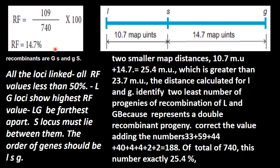All the loci are linked because all recombinant frequency value is less than 50 percent. It is all linked. All the offspring, recombinant frequency for L and G show the highest recombinant value, that is 23.7, that is the highest. So L and G, in the other end L allele and G allele will be furthest apart at the end.